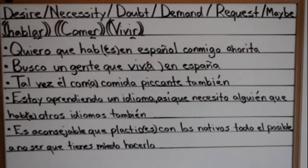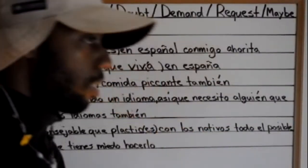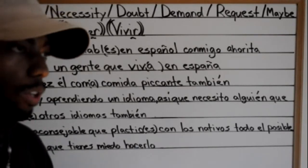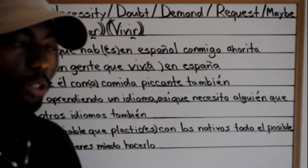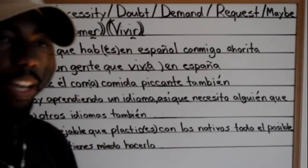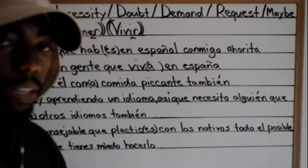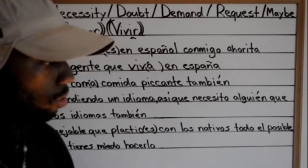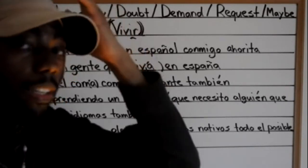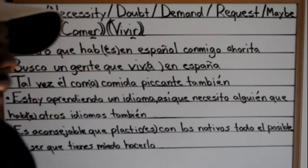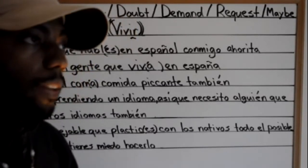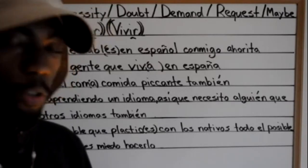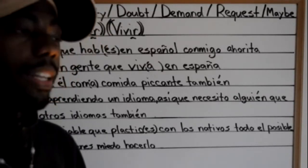So basically in this video I'm going to break down the subjunctive easily. The first thing you need to learn is what subjunctive means. To keep it simple, it refers to something that isn't guaranteed. For example, 'I want you to go to the store with me tomorrow' — it's a possibility that you won't go. We don't know for sure.